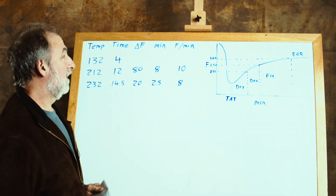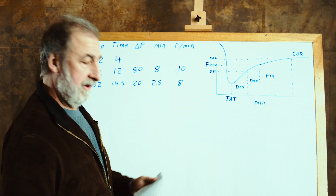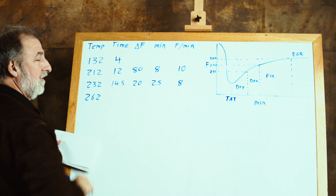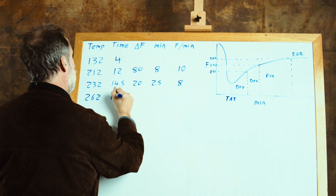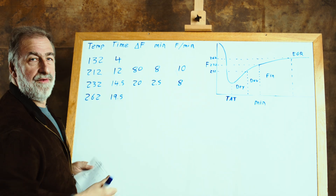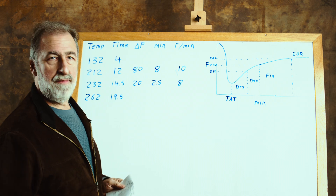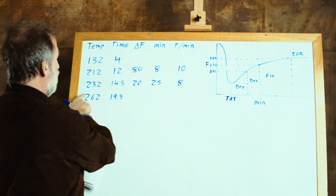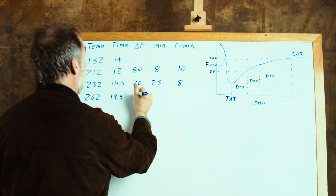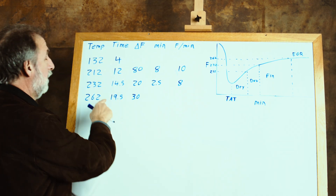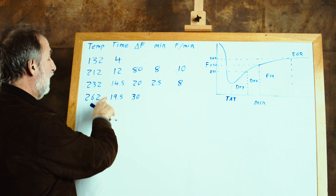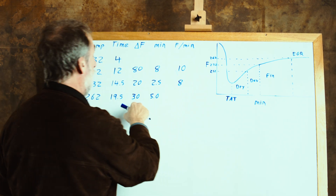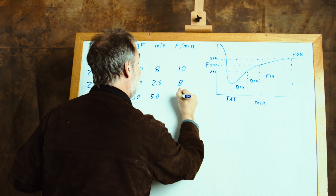Coming into the home stretch, we're just doing the same thing over again. Here we have an end temperature of 262 degrees. The change in temperature is 262 minus 232, which is 30 degrees. It's taken five minutes — 19.5 minus 14.5. And 30 divided by five is 6 degrees Fahrenheit per minute. That gives us everything we need to build the three different profile notations.